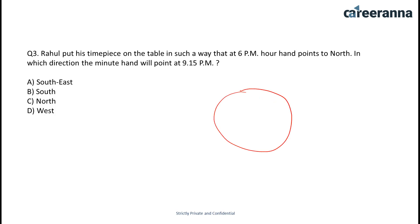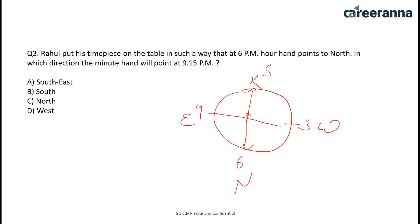This is the watch. North is given, so this becomes south, this becomes west, and this is east. At 9:15 the minute hand will be in this direction — pointing west. Option D becomes our answer.